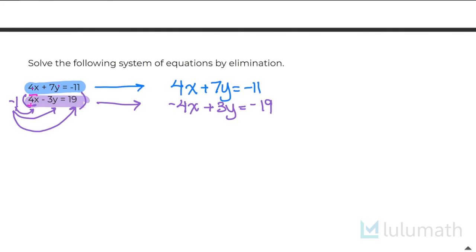By doing that, I now can add my two equations together and 4x and negative 4x end up being 0 so they cancel each other out. So then 7y plus 3y is 10y. And negative 11 plus negative 19 ends up giving me negative 30. Divide both sides by 10 and I end up getting y equals negative 3.